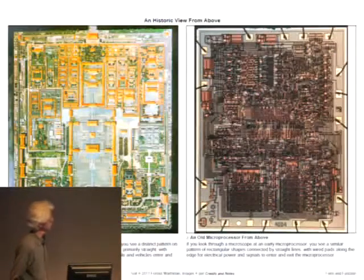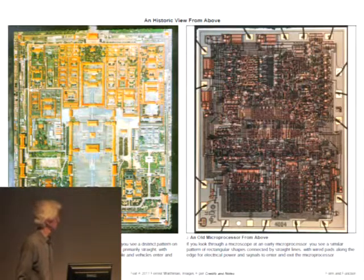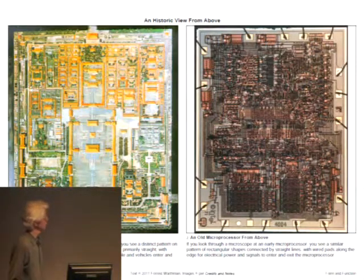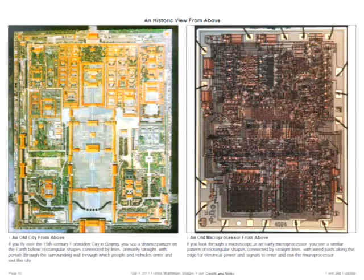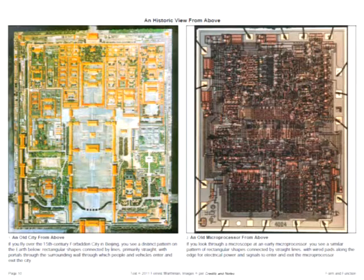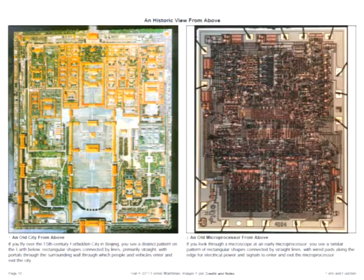If you fly over the 15th century Forbidden City in Beijing, you see a distinctive pattern on the ground: rectangles connected by lines, which are mostly straight. If you look through a microscope at an early Intel microprocessor, you see a similar pattern: rectangles connected by lines, mostly straight.